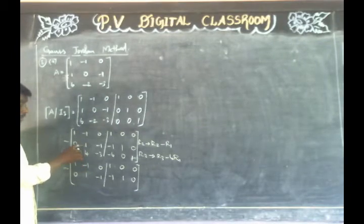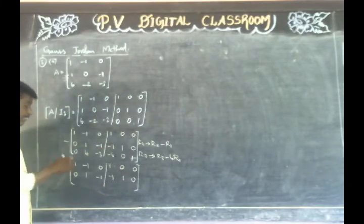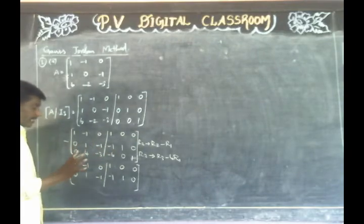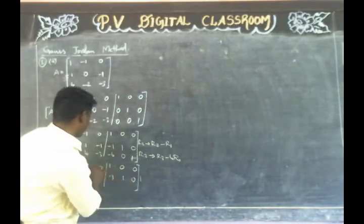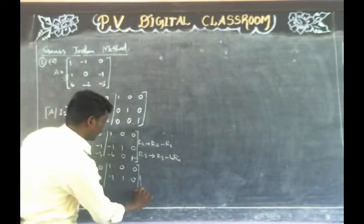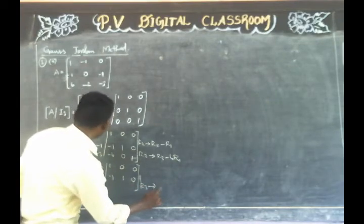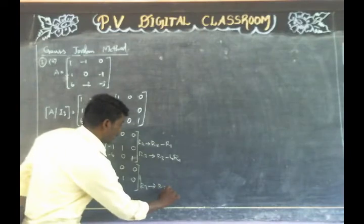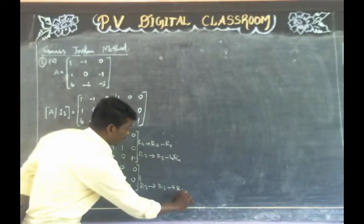R2: multiply R2 by 1/4. R3 gives R3 minus 4 into R2.